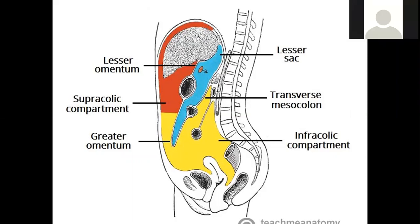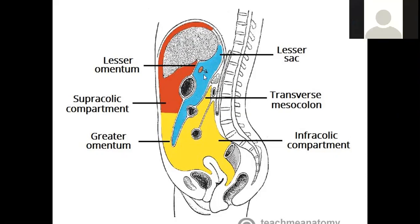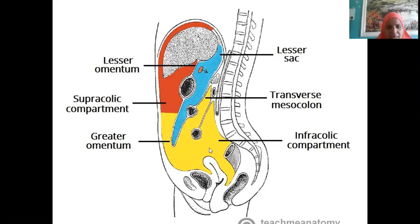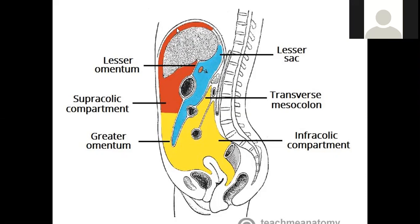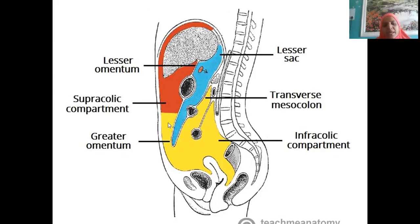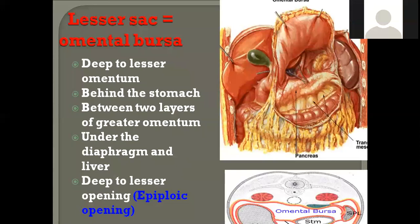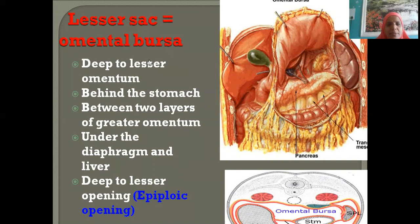The blue area is the lesser sac; the orange and yellow area together is the greater sac. The greater sac is divided into two compartments: the supracolic and infracolic compartments. The lesser sac is present behind the stomach. Taking a section: this is the liver, this is the stomach.